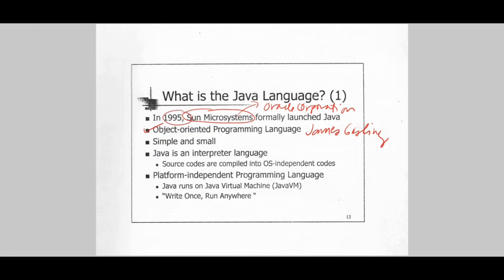Code written in Java programming language is described as simple and small. It is simple and small because you could embed short Java codes inside HTML codes of web pages, allowing these web pages to become dynamic web pages — running some code, not just consisting of static text or graphic images, but actually performing some operations or computations.